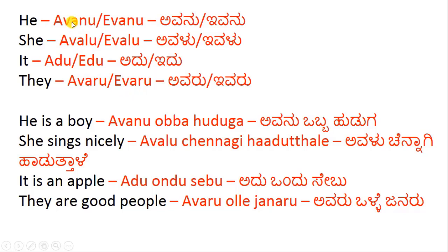Now, we use Avanu for 'he' if the person is away from you — if the person is in some other place, some other state, some other country, somewhere you cannot see. Then we use Avanu. The same thing goes for Avalu, Adu, and Avaru. You use these when the person is far away from you.